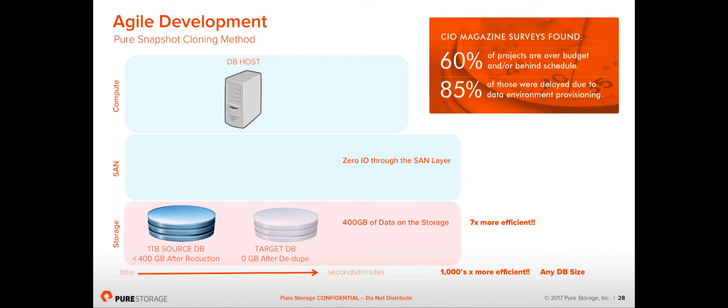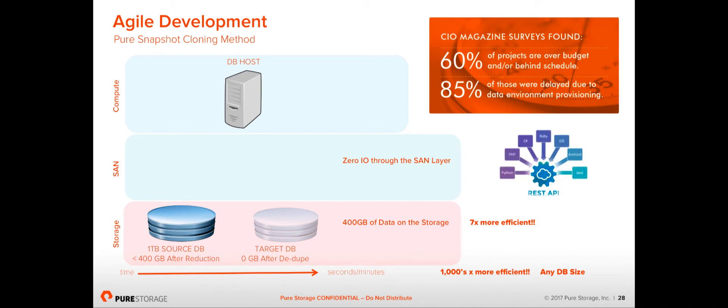One common question is: does a DBA need to involve the storage admin to take snapshots, slowing down the process? The answer is no. There's a REST API built into the array that allows you to make calls to take snapshots, clone them, and move them around from whatever development language you want to use — whether that's a Java program, Python, or even a shell script, which is what we'll use in this demo.